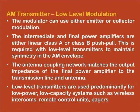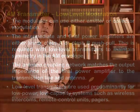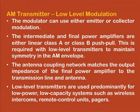The modulator for AM low level modulation can be either emitter or collector modulation, and the intermediate and final power amplifiers are either linear class A or class B push-pull amplifiers. An important point to note is that these amplifiers are linear but have lower power efficiency, which is a drawback of low level modulation. The antenna coupling network matches the output impedance of the final power amplifier to the transmission line or antenna. Low level transmitters are used predominantly for low power systems such as wireless intercoms, remote control units, and pagers.